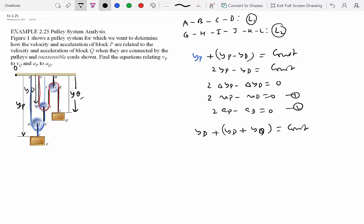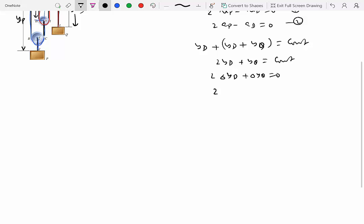So we get basically 2YD plus YQ equal to constant. So if I apply delta, I get 2 delta YD plus delta YQ equal to 0. If I differentiate it, I get velocity of D plus velocity of Q equal to 0, and differentiate once more, I get that. So let's call this 3 and 4.